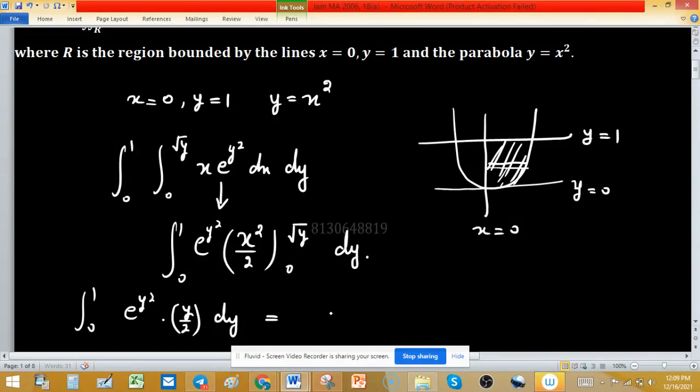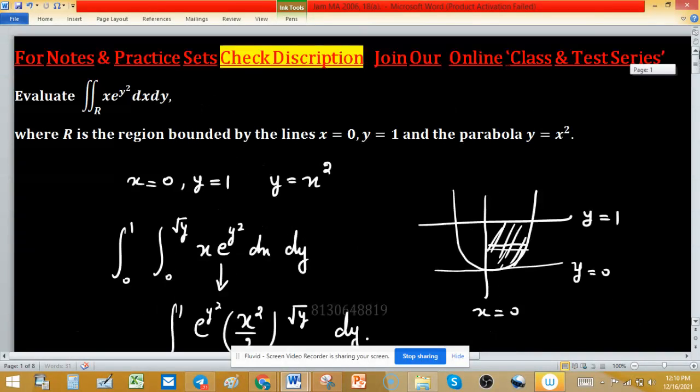After integration, we have 1 upon 2 times 1 by 2 e raised to the power y squared, with limits 0 to 1. Put in the lower and upper limits, and finally we have 1 upon 4 times e minus 1.